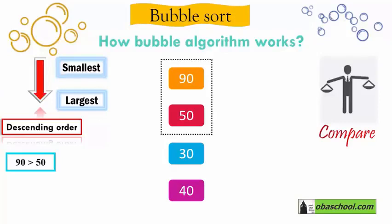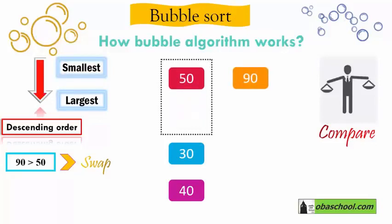We have 90 and 50. 90 is bigger than 50, and we are sorting in descending order, so the smallest should be at the top. That means we move 50 up and 90 down — we swap the numbers. As you can see, 50 goes up and 90 goes down. This is the first step in the bubble sort.